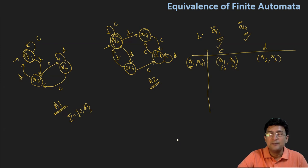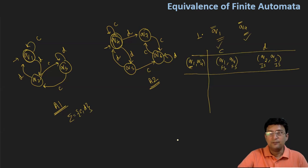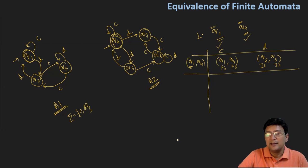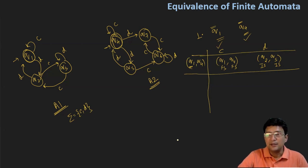Looking at these pairs: Q2 is a non-final state (an intermediate state) and Q5 is also a non-final state (an intermediate state). So if both are final states or both are intermediate states, this is fine and we can go ahead. If one is a final state and the other is an intermediate state, the two automata cannot be equivalent. So we take the new pair Q2 and Q5, generated from row one of this computation.